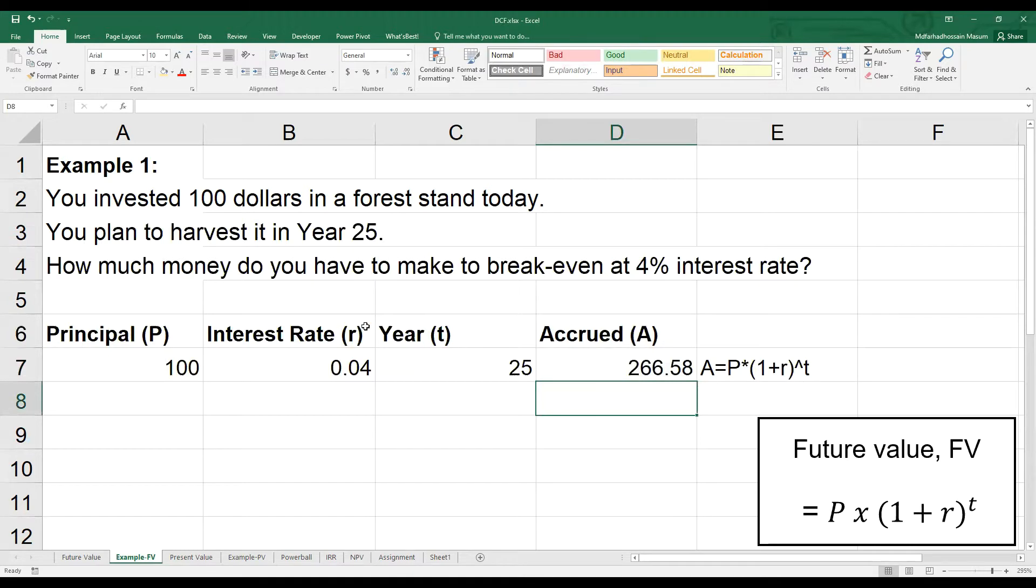What if you want to harvest in year 30? Obviously, you need more if it is coming from further in the future. What if interest rate increases to 6%? Of course, you need more from the same year because it is being discounted more.